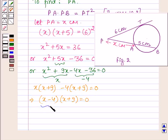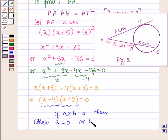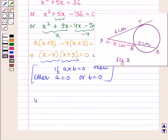Now, we know that if the product of two numbers is equal to 0, then at least one of them is 0, that is either a is equal to 0 or we have b is equal to 0. So from here, we can say that either x minus 4 is equal to 0 or x plus 9 is equal to 0.